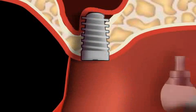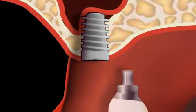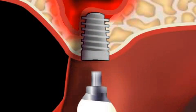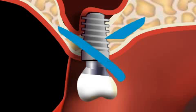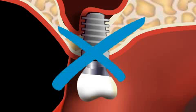Often, an implantation is no longer possible after alveolar ridge atrophy. Without bone augmentation surgery, damage would result to the nerves, or, as seen here, to the maxillary sinus.